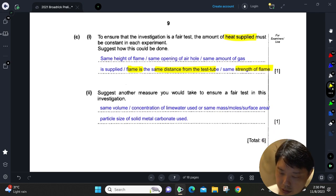The last question suggests another measure you would take to ensure a fair test. You need to think about other variables other than the Bunsen burner. In this case, it will be the lime water that is used and also the mass, surface area, and particle size of your metal carbonate.